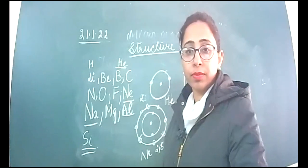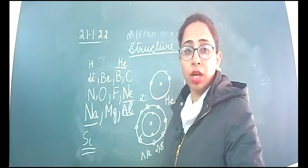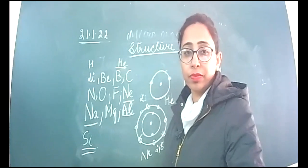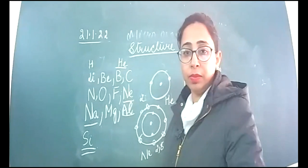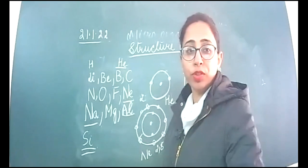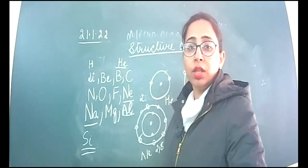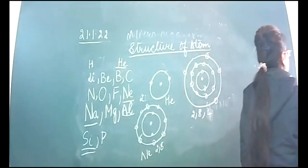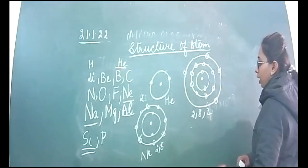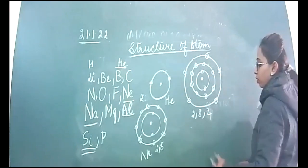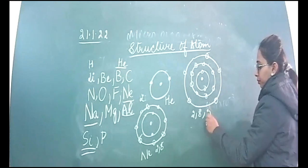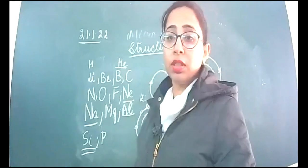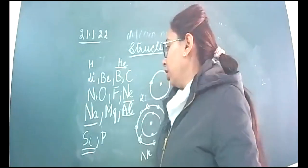The next element is phosphorus with atomic number 15, and thus it will have five electrons in the valence shell.